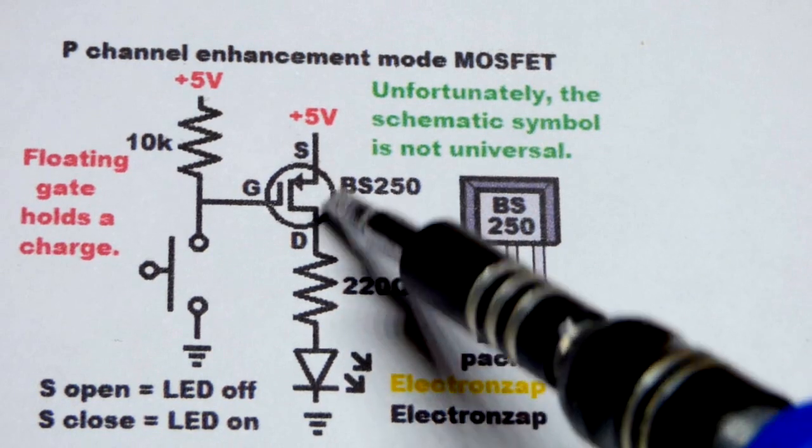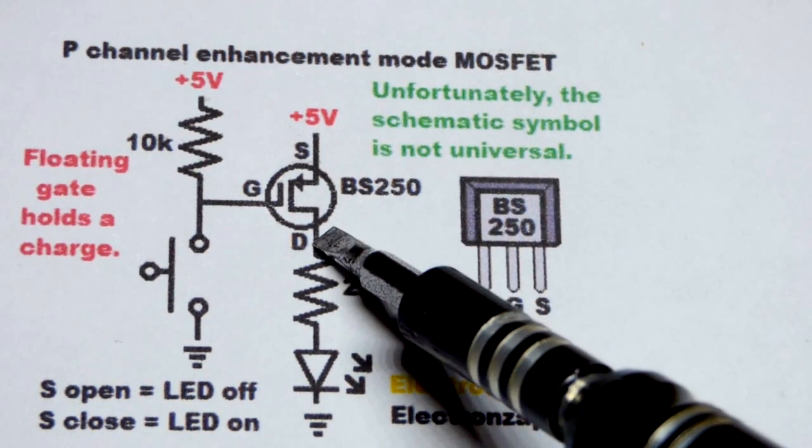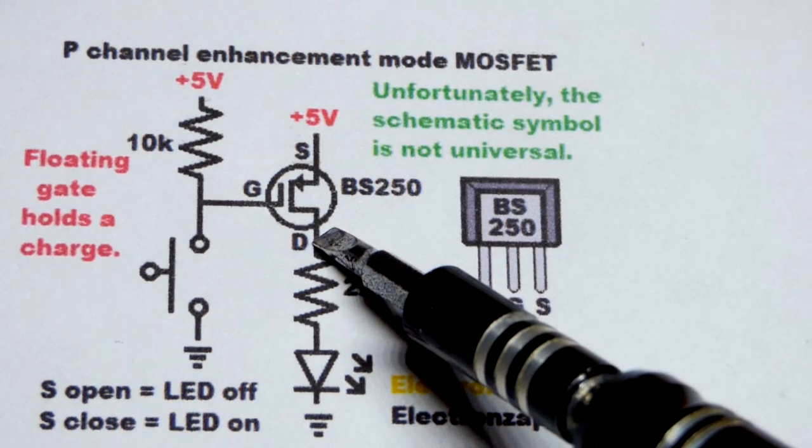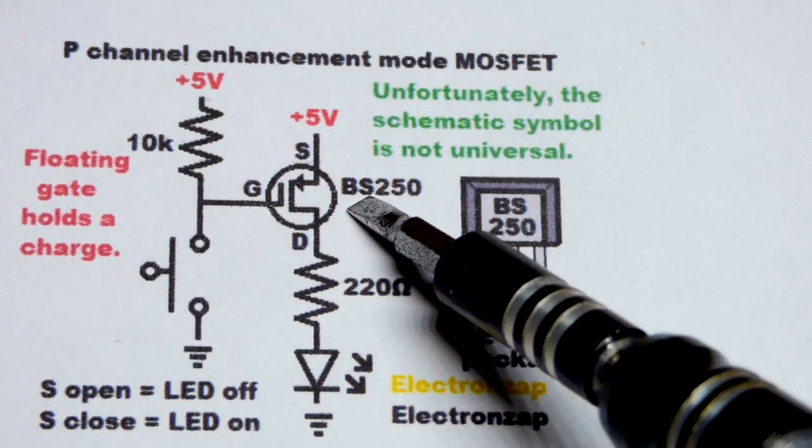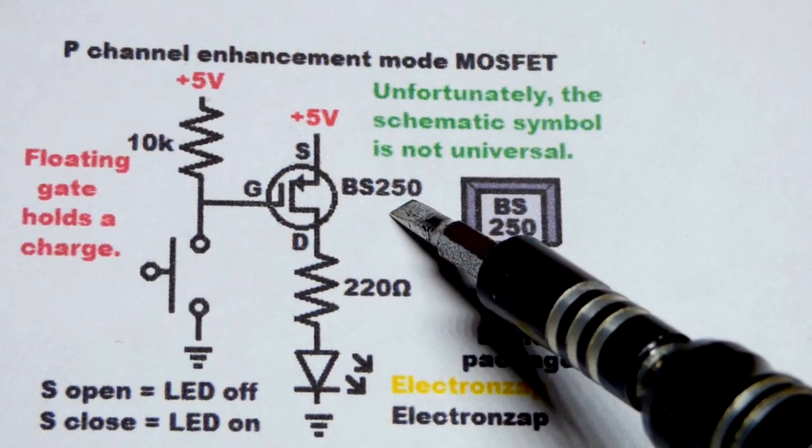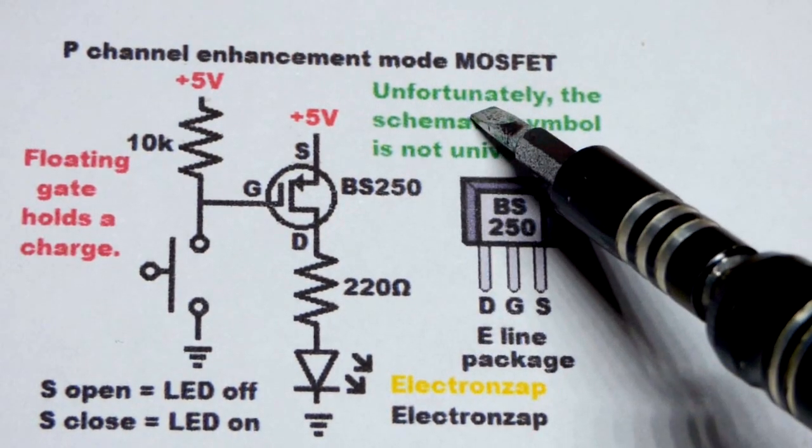and right pin source when you're looking at the front. So here's the schematic symbol I like for the P-channel enhancement mode MOSFET. There's a lot of different schematic symbols that are used, unfortunately. So hopefully there is the part number next to the schematic symbol. I wrote a little note there.